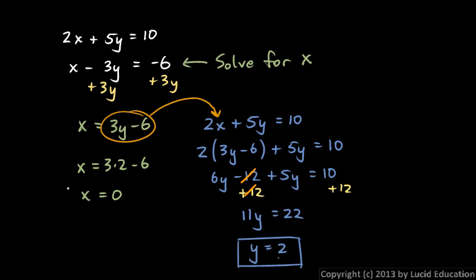And that's fine. 0 is a number. 0 is a valid answer. That's not the same thing as there being no solution. The solution is x is 0, y is 2. So you could write it like this, 0 comma 2. But that's our answer. That pair of x and y values satisfies both of those equations at the same time.